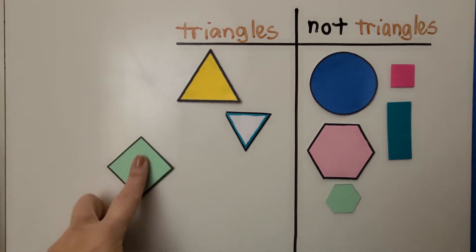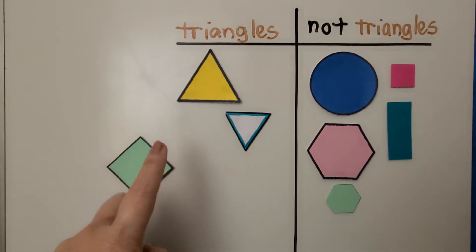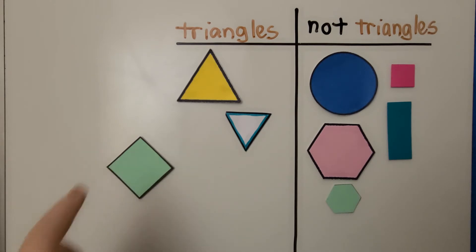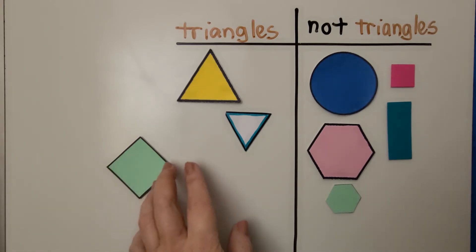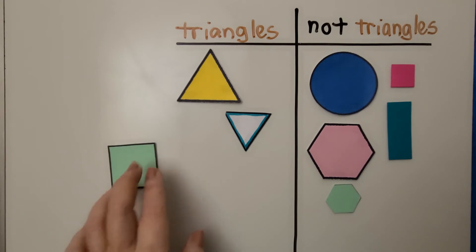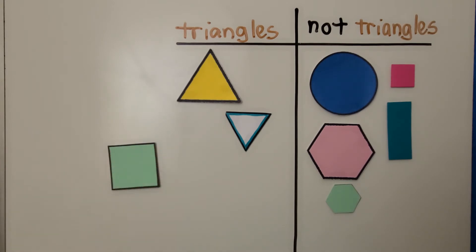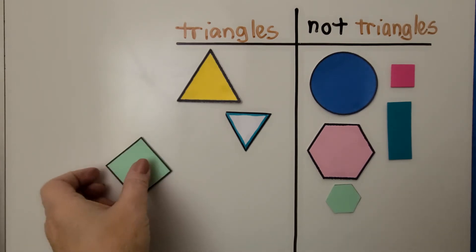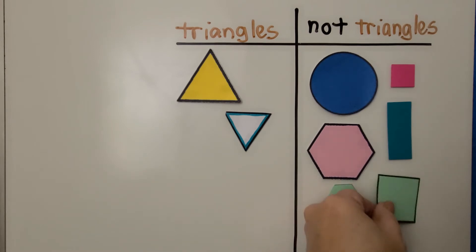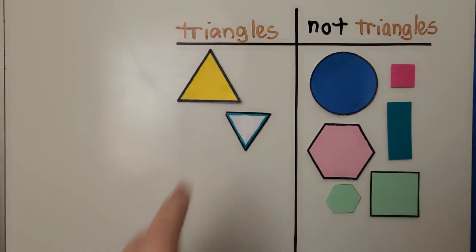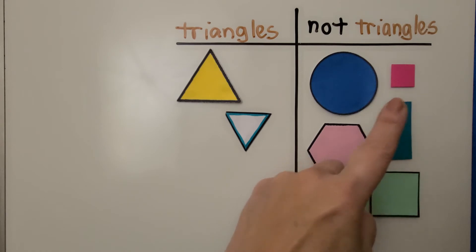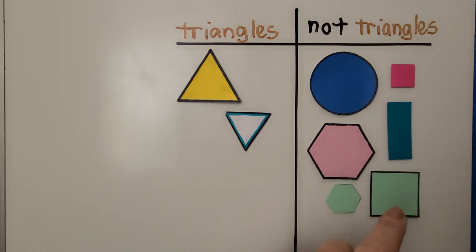Is this a triangle? It has one, two, three, four straight sides. And we can turn it and see it has four square corners. That's a square. That's not a triangle. We can put it over here. We found one, two triangles. There are one, two, three, four, five, six that are not triangles.